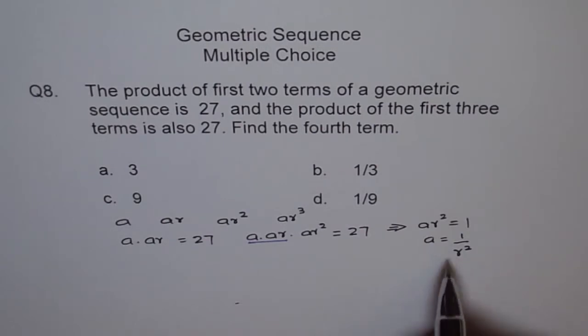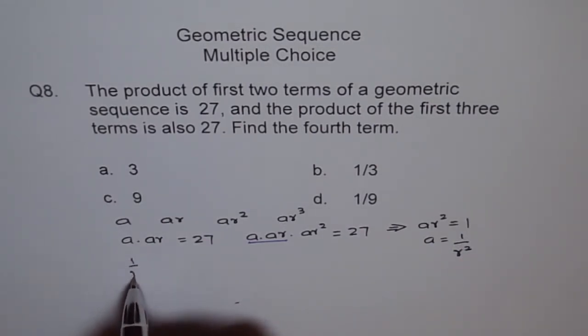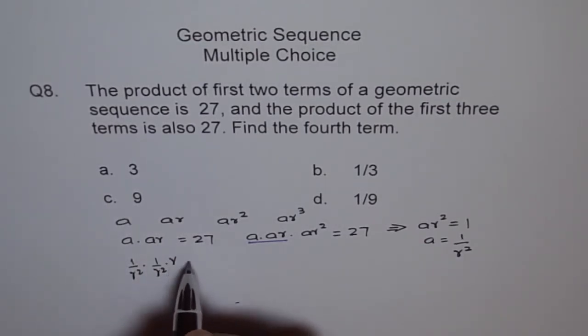Since a is 1 over r squared, we'll put this value here. A is 1 over r squared times 1 over r squared times r equals 27. Do you see how?